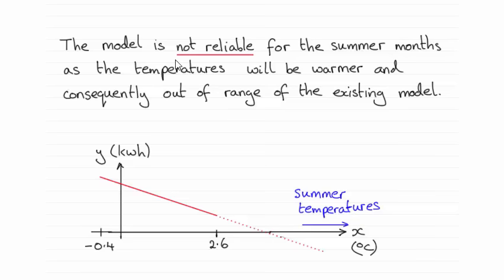As you can see, the model is not reliable for the summer months. That's because the temperatures will be warmer and consequently out of range of the existing model.